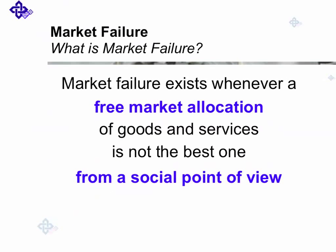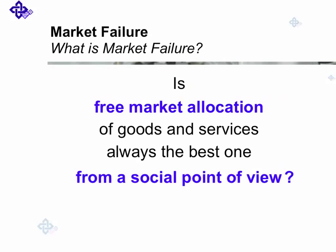So market failure exists whenever a free market allocation of goods and services is not the best one from a social point of view. Is free market allocation of goods and services always the best one from a social point of view? If yes, there doesn't exist market failure. But if no, we have market failure.